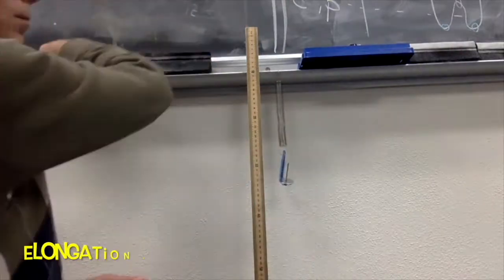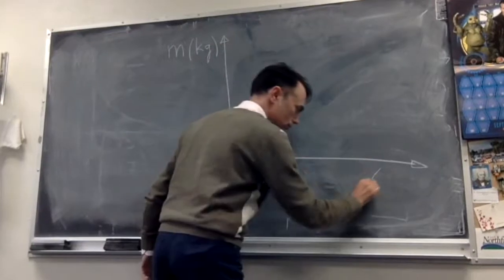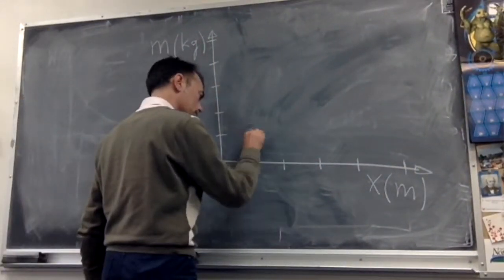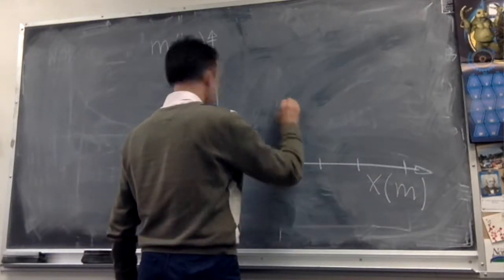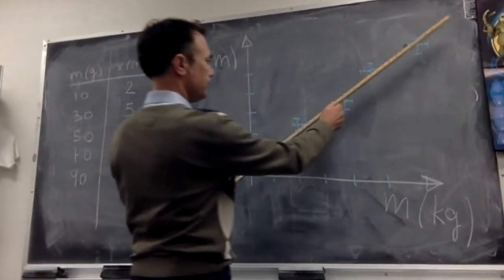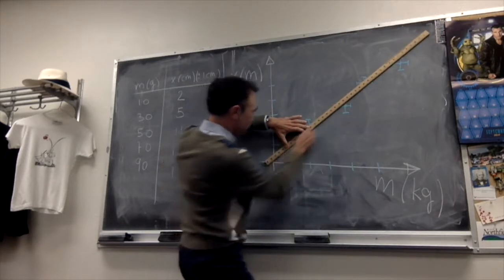Look at this spring. The more force I apply to it, the more it stretches. Let me apply different weights to this spring and then measure the elongation, or the distance stretched by the spring. If we plot the mass versus the elongation — where mass is proportional to the force — I get a linear relationship, which is just Hooke's law: the force applied and the elongation are linearly proportional, and the constant of proportionality is just the elastic constant of the spring.